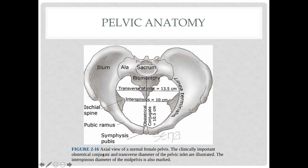Let's reiterate the important parts of the pelvis that are clinically significant in obstetrics: the ilium, the pubic ramus, the ischial spines, the sacrum, the sacral promontory, the coccyx, the symphysis pubis, and — not shown here — the ischial tuberosity.